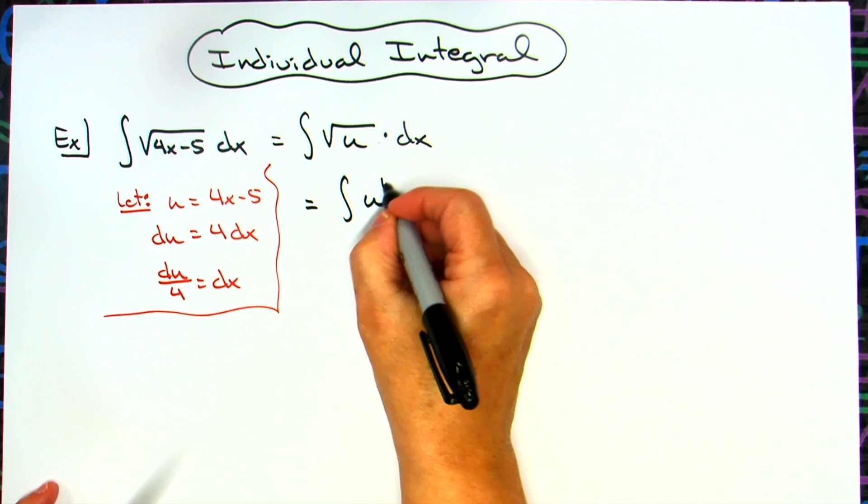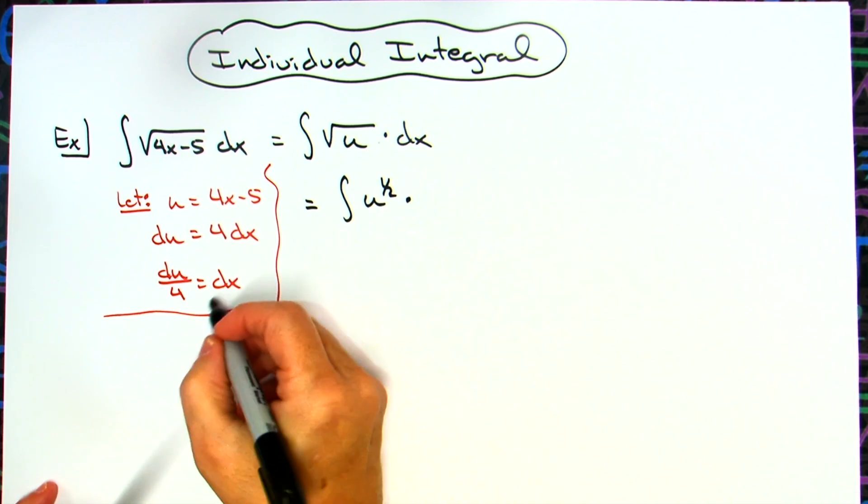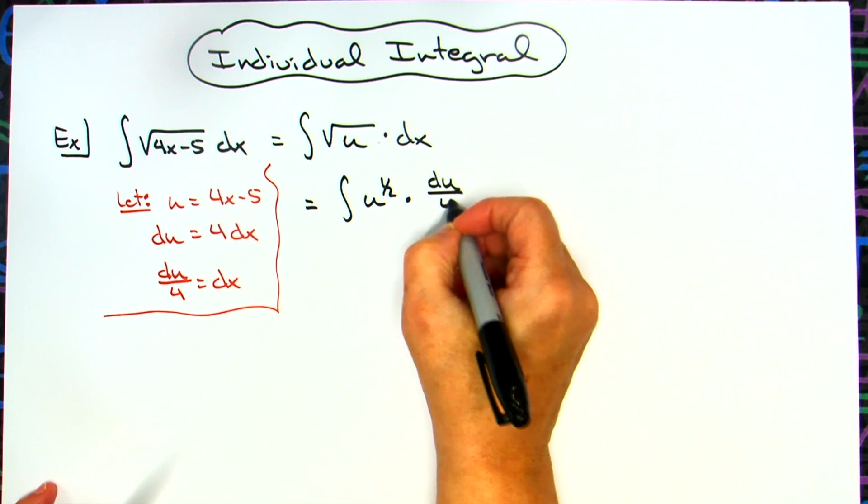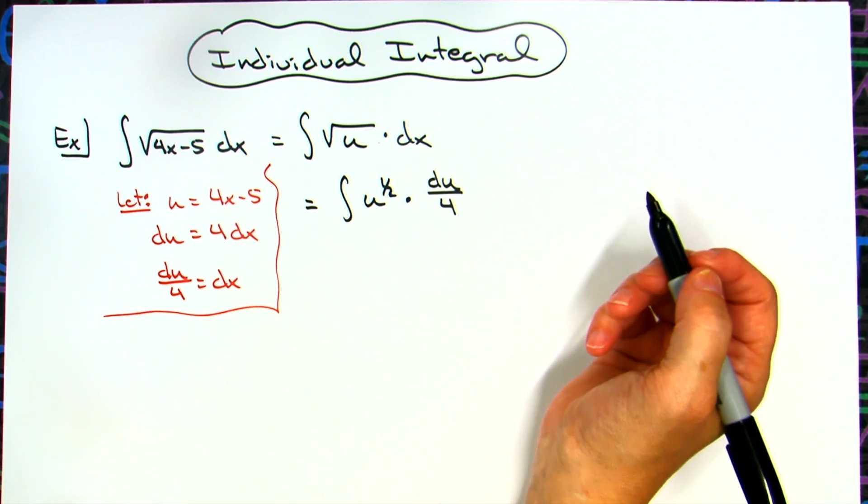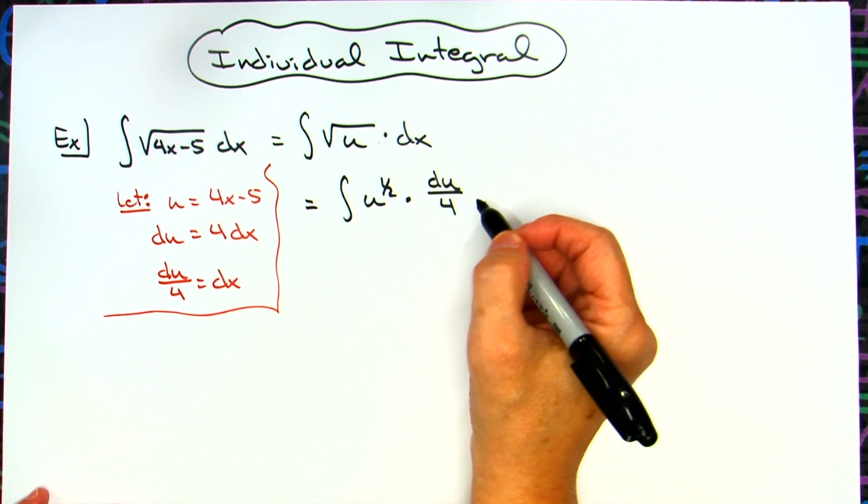So now we're going to have the integral of u raised to the 1 half power. We'll substitute that dx for a du over 4. Now we're all in terms of u, so now we can start to work on this.